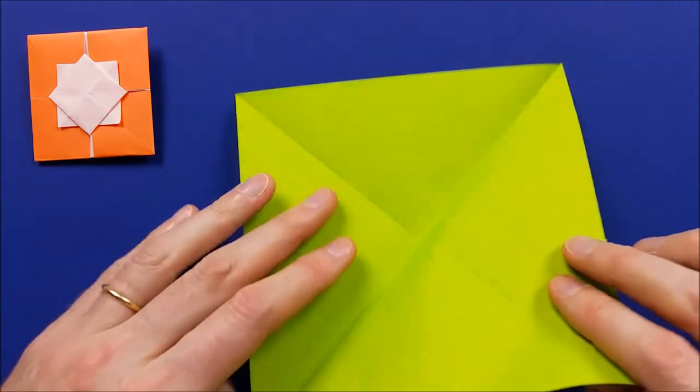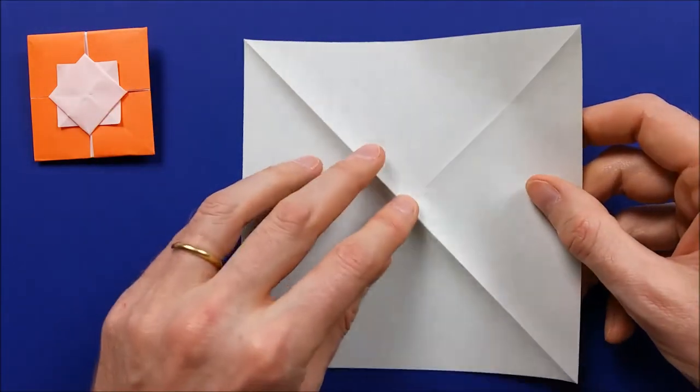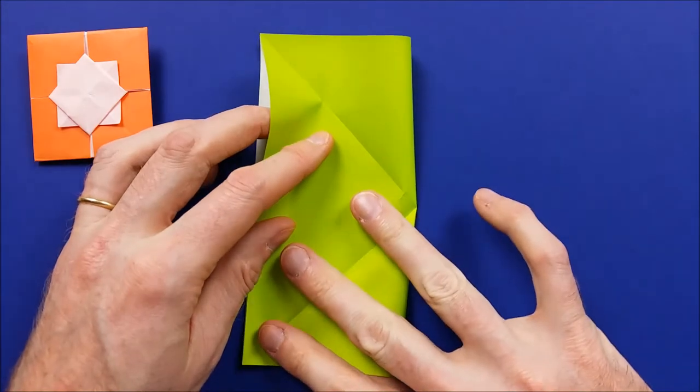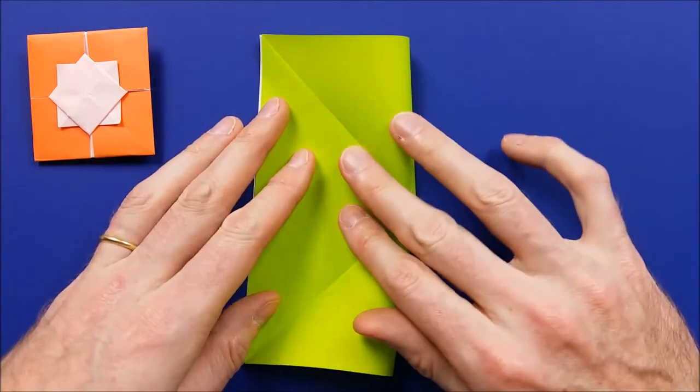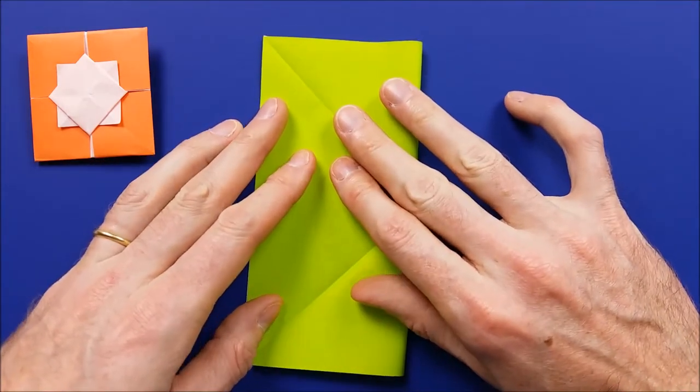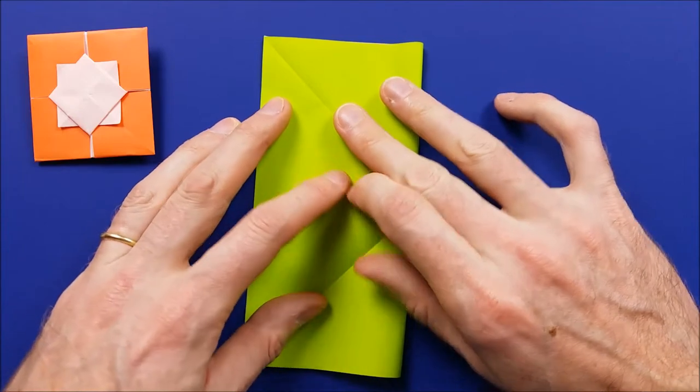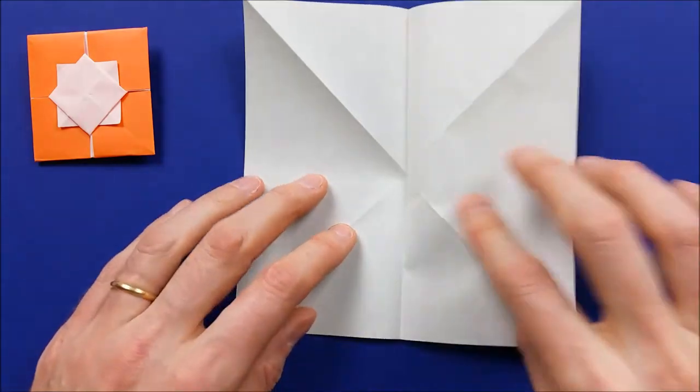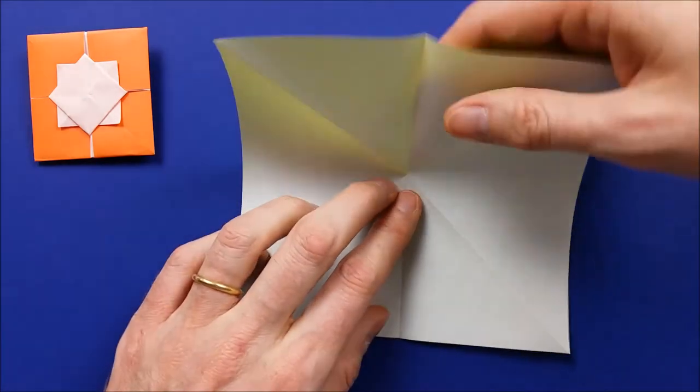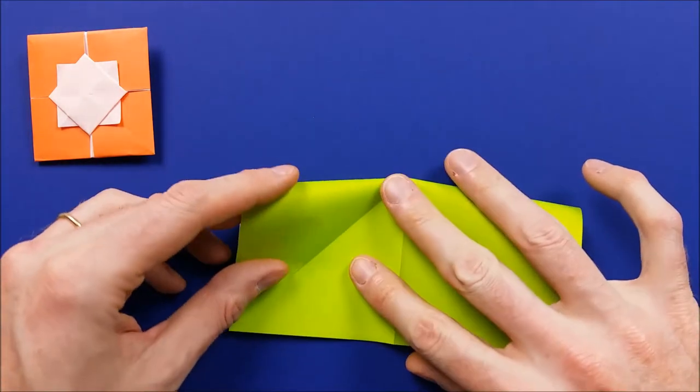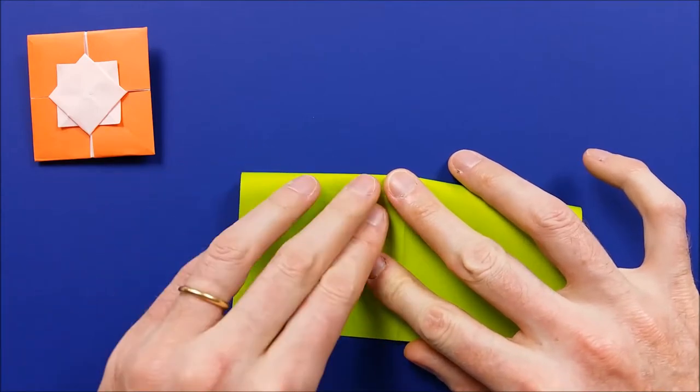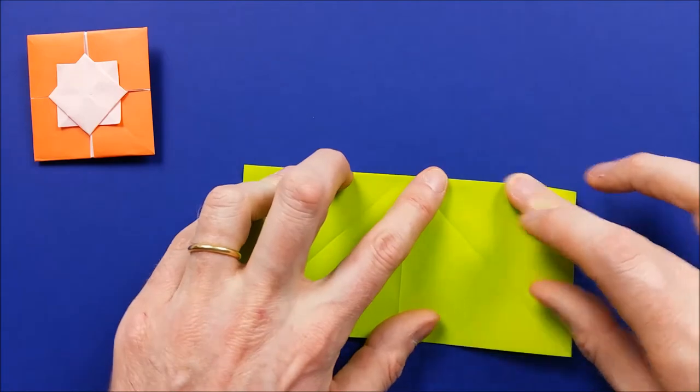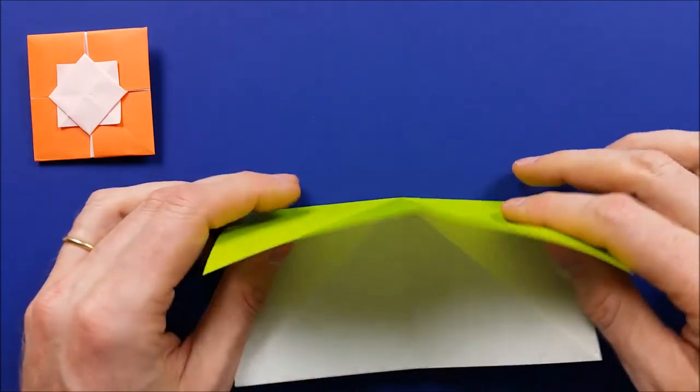Turn the paper to the other side. And fold the square vertically. Mark the fold and unfold. Fold the square horizontally. And unfold.